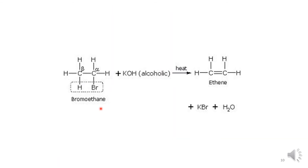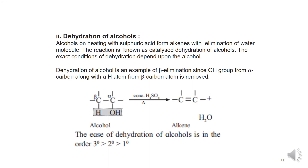Similarly, if bromoethane is taken in the presence of alcoholic KOH and the mixture is heated, you get ethene, potassium bromide, and water.